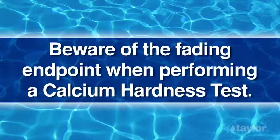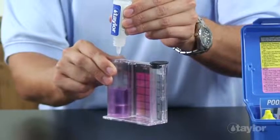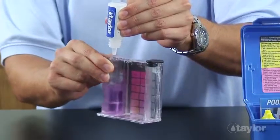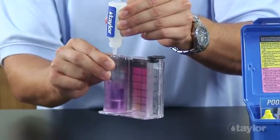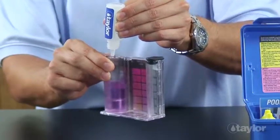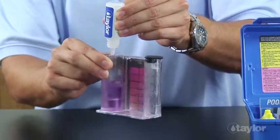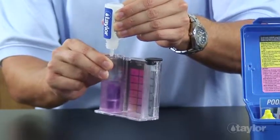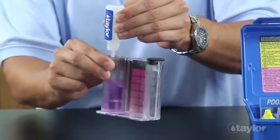Beware of the fading endpoint when performing a calcium hardness test. A fading point is the most common error in a calcium hardness test. Instead of obtaining a well-defined permanent endpoint, some color change is observed, but soon the sample reverses to the original color.